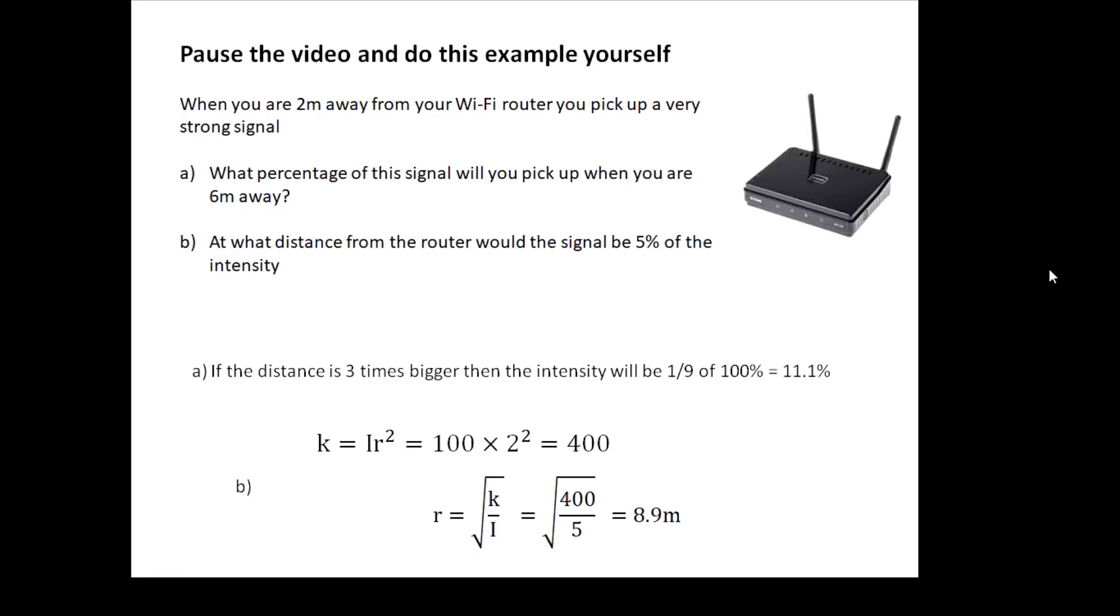It'll be a ninth, because it's 1 over 3 squared. A ninth of 100 percent is 11.1 percent. 100 divided by 9 is 11.1. Part b: I've worked out the value of k.